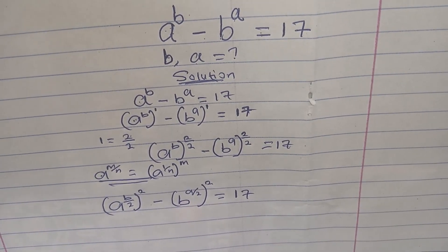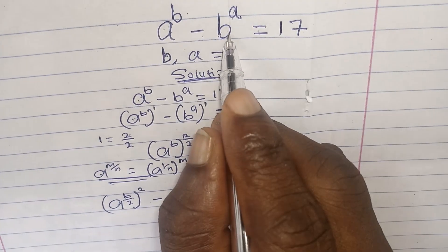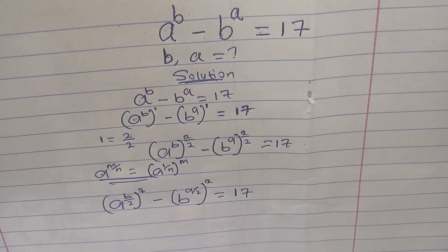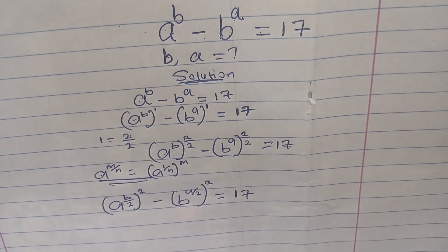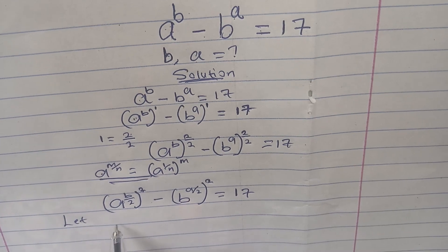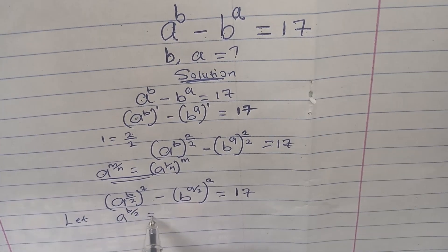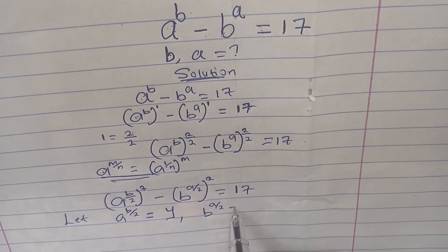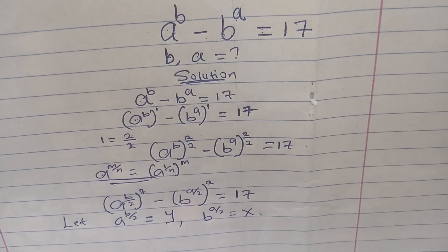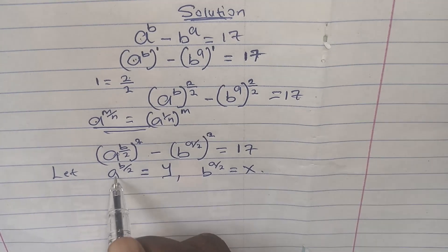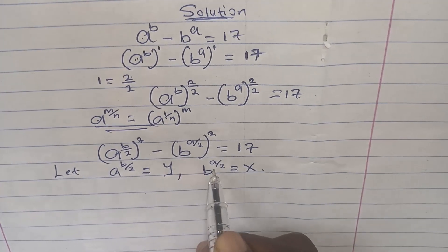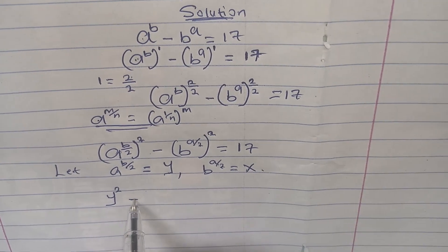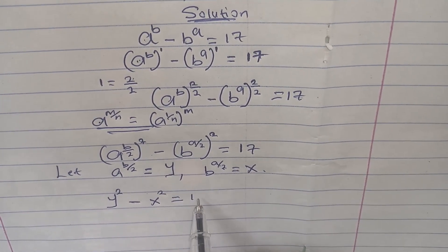The equation still remains the same — the transformations cancel and bring us back to the same form. Now our next step: let a to the power of b over 2 equal y, and b to the power of a over 2 equal x. Since we've done this, wherever we see a to the power of b over 2 we put y, and wherever we see b to the power of a over 2 we put x. So we simply have y squared minus x squared equals 17.